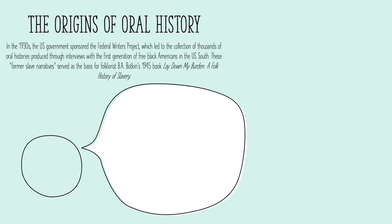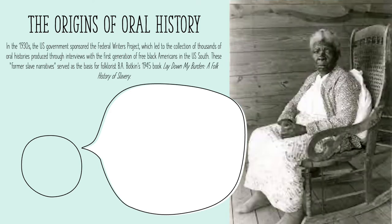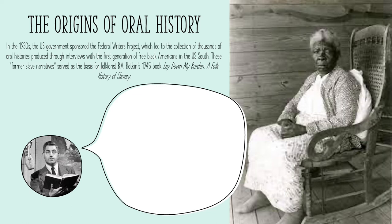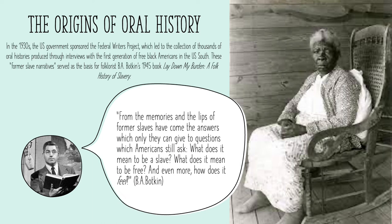One of the earliest examples of oral history was the Federal Writers Project, a U.S. government-sponsored initiative of the 1930s. Intended to demonstrate the cultural diversity of the American people, this project sent hundreds of interviewers all across the country in search of life stories. One part of the project entailed the collection of the memories of the first generation of free black Americans in the U.S. South. Dubbed the Former Slave Narratives, this project served as the inspiration for folklorist B.A. Botkin's 1945 text, Lay My Burden Down, A Folk History of Slavery. Defending his choice of oral histories as his primary source, Botkin explained that, quote, from the memories and the lips of former slaves have come the answers which only they can give to questions which Americans still ask: What does it mean to be a slave? What does it mean to be free? And even more, how does it feel?